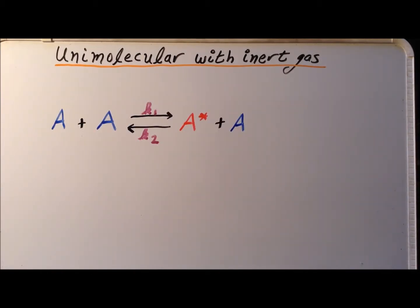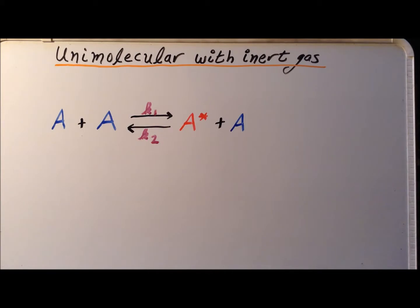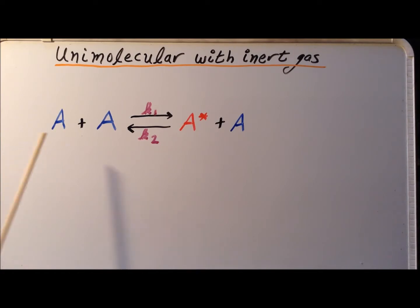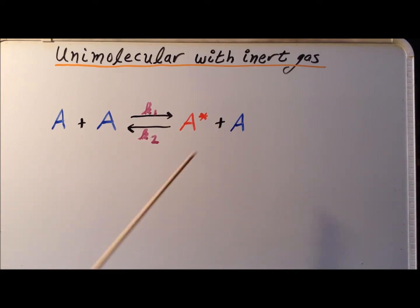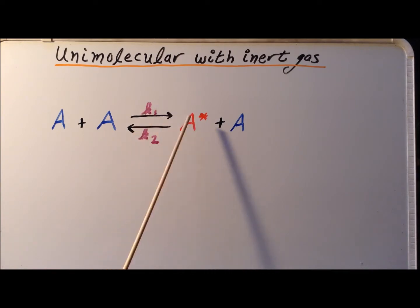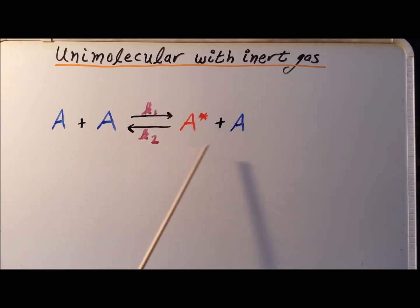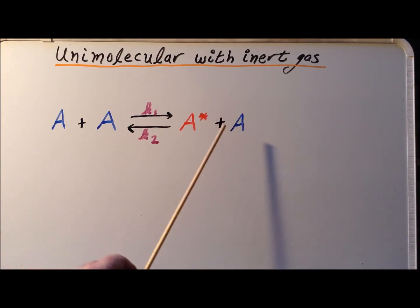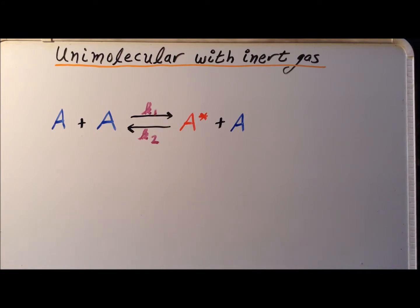We are representing our reactive molecule as A. In one step of the mechanism, two molecules of the reactive gas A collide and form a reactive complex, red A star, and one molecule that is not activated. In the forward direction, the rate constant is K1. The reverse reaction, where the activated complex crashes into a non-reactive molecule and deactivates to form two deactivated A's, has the rate constant K2.